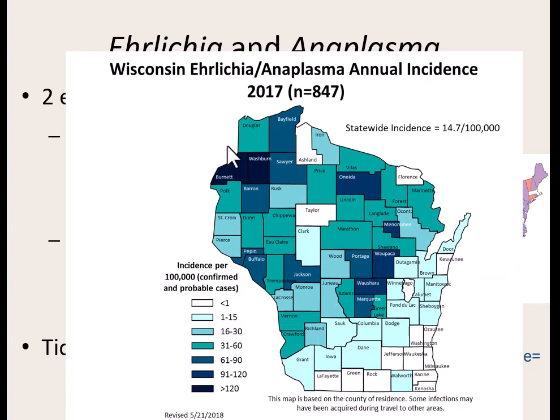A 2017 map shows the number of cases of Ehrlichia and Anaplasma — we have a few cases every year. The farther north you go into wooded and agricultural areas, the more cases seem to go up. More agriculture and more woods means more cases the farther north you go.